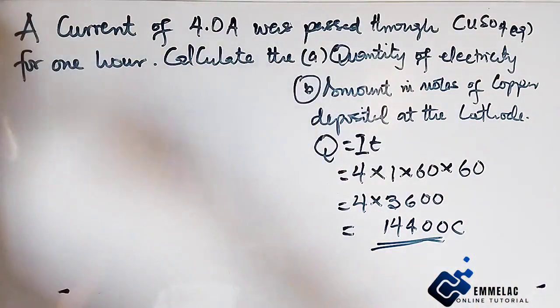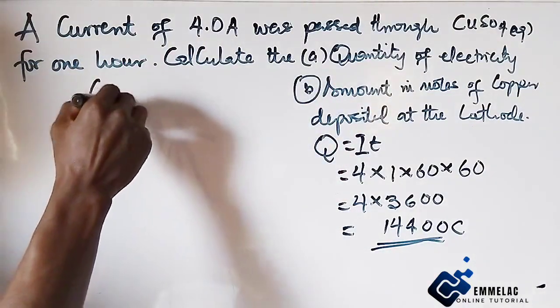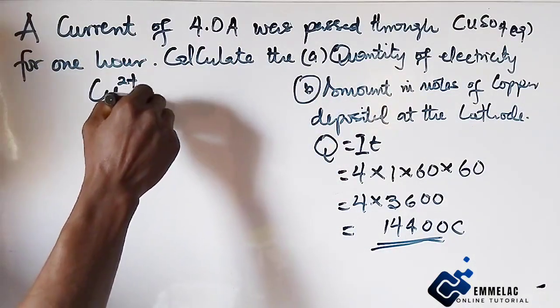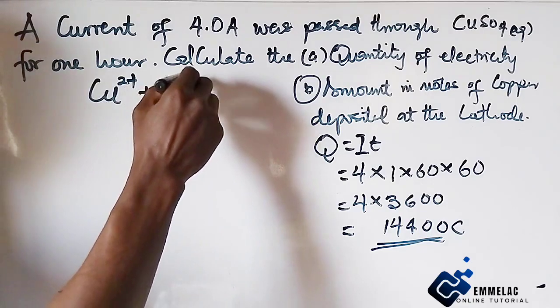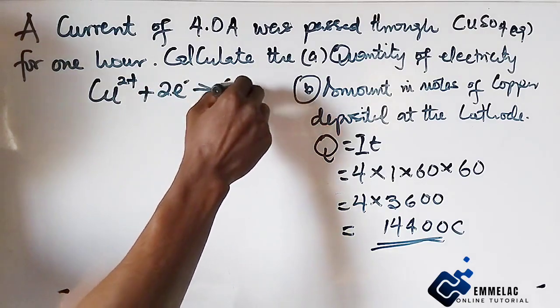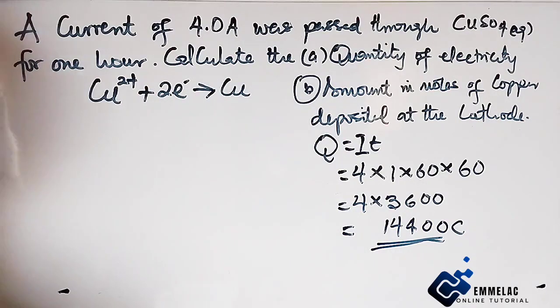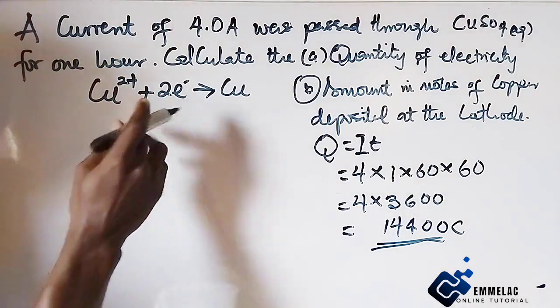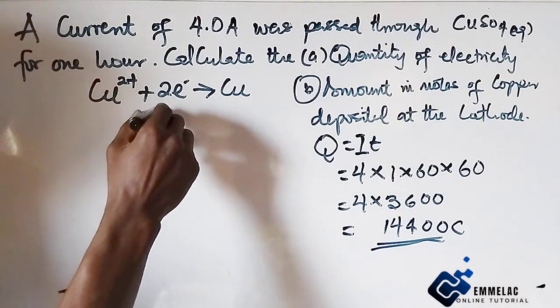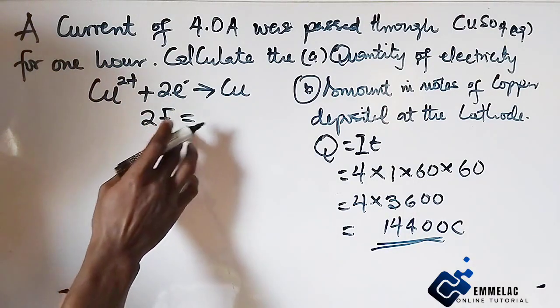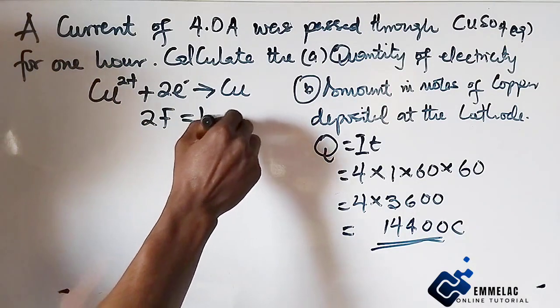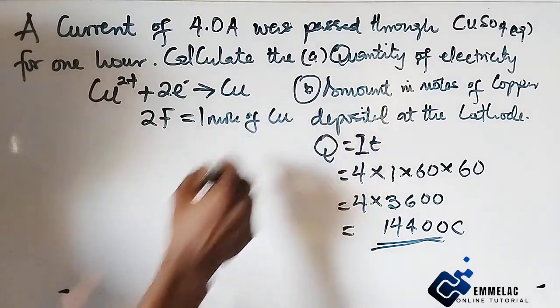Now, writing out the redox reaction here. Here we have Cu²⁺ discharge 2 electrons to become copper. So from here now we can see that 2 Faraday actually discharge 1 mole of copper.